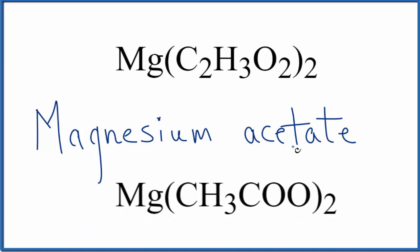If you're given the name and asked to write the formula, magnesium is 2+. The whole acetate ion is 1-. So we need two acetate ions for these charges to balance out.